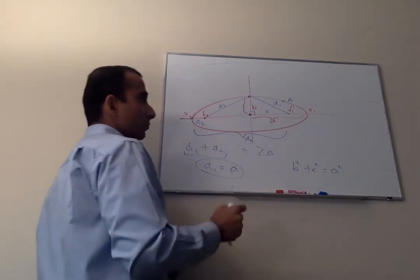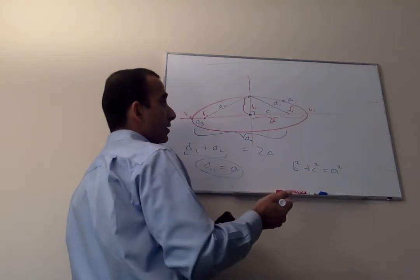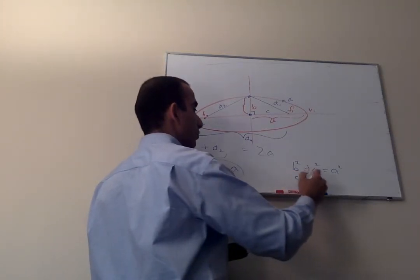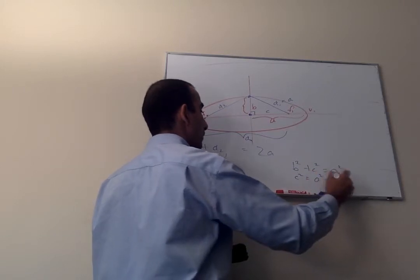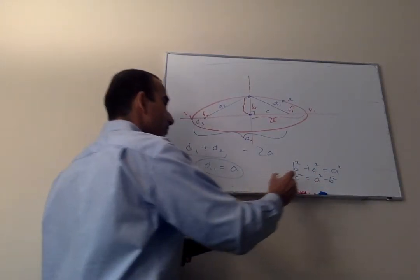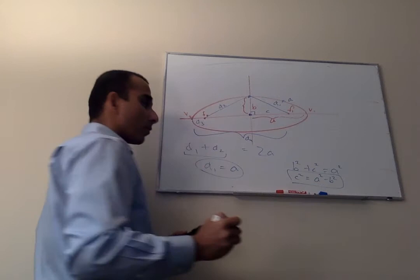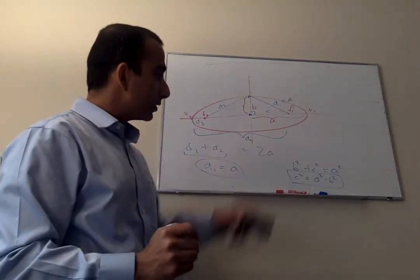This can also be written as, very often the way it's written as, C squared is equal to A squared minus B squared. And that's the way to find the focal distance in an ellipse.